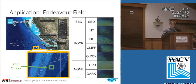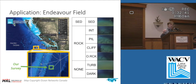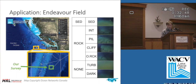On the right you see two of the classification schemes we came up with for imagery from the area. These were developed with help from a geologist who's an expert in the region. From top to bottom you can see the categories: sedimented, interrupted lava flow, pillow lava, cliff, other rock, turbid water, and no substrate.